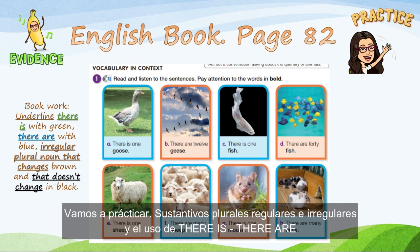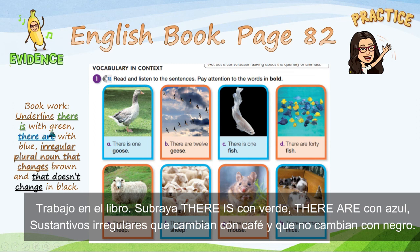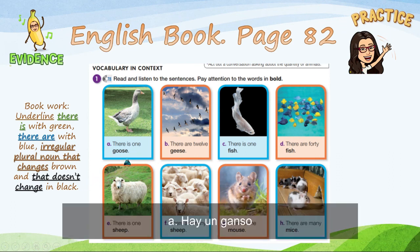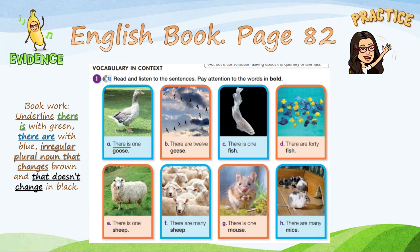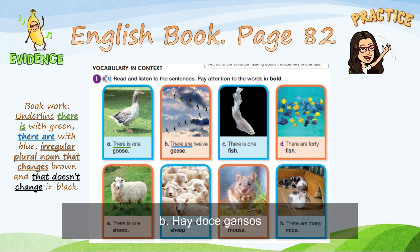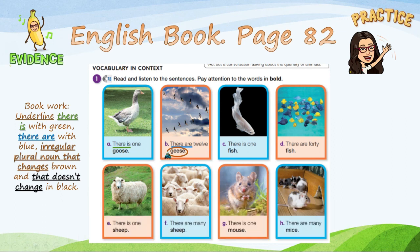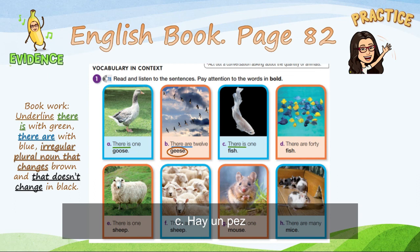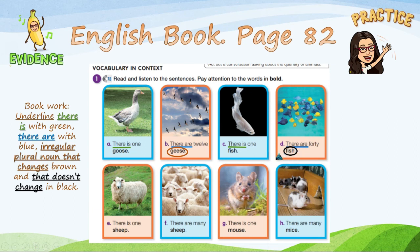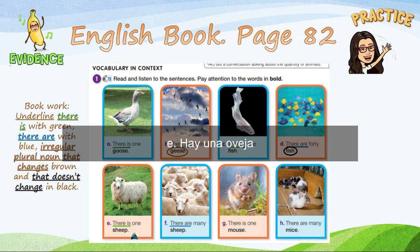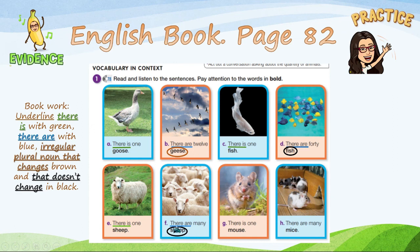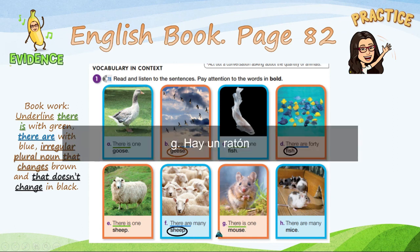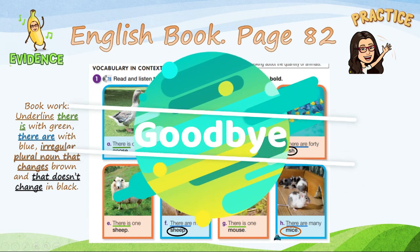Let's practice regular and irregular nouns and the use of there is and there are. Book work — underline there is in green, there are in blue, irregular plural nouns that change in brown, and those that don't change in black. Let's start: there is one goose; there are twelve geese — geese is a plural noun that changes; there is one fish, there are forty fish — fish doesn't change; there is one sheep, there are many sheep — sheep doesn't change; there is one mouse, there are many mice — mice changes.